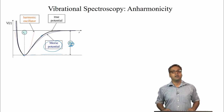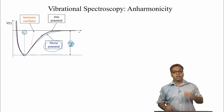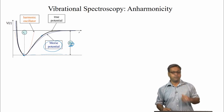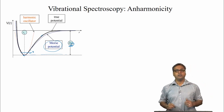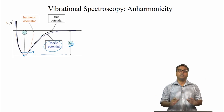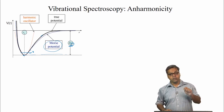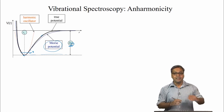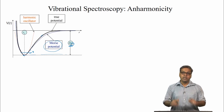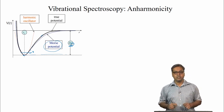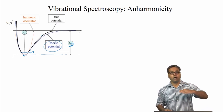The peculiarity of this dissociation energy is that it cannot be directly measured from experiments. This is because the molecules are never at the bottom of the energy well. The lowest energy they can possibly have is the zero-point energy, or the energy at V equals 0, which in the harmonic oscillator was given by half h-nu, or nu-bar by 2.